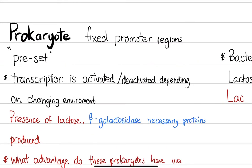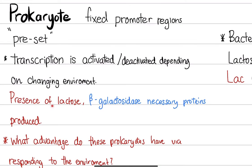As an example, when lactose is present, a bacterium will recognize it and decide it's time to break that lactose down to glucose. Only then will it transcribe and translate the enzymes responsible for breaking down lactose. Beta-galactosidase is one of these enzymes that will break down lactose.